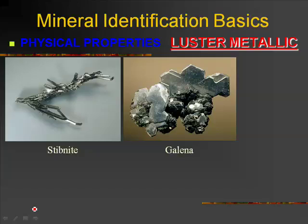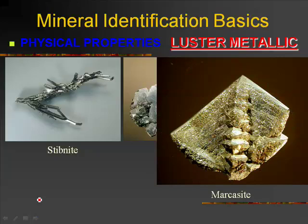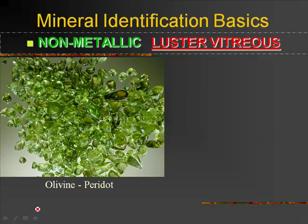It doesn't have to be silvery — it could be a gold luster. Here we have pyrite, fool's gold. However, here's a shiny mineral, but it's shiny like glass is. We call that vitreous, which is another word for glassy. So olivine — the mineral olivine has one form called peridot, a birthstone — and that looks like green glass: vitreous luster.